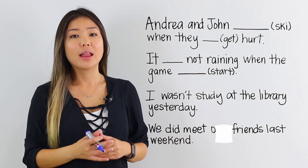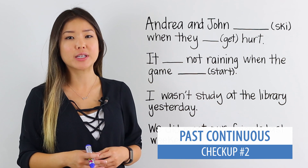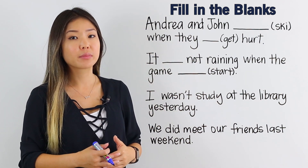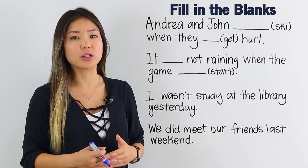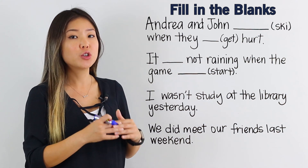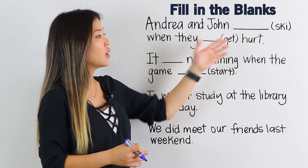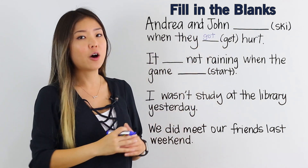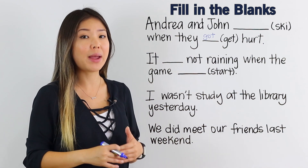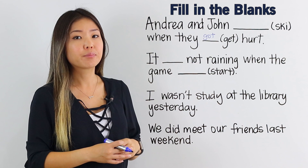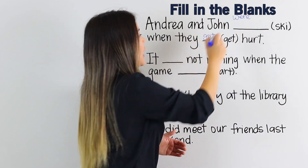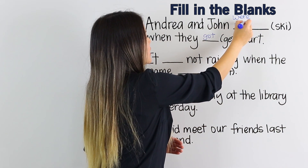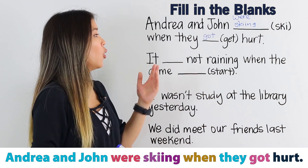Let's move on. Now let's start a checkup of the when usage of the past continuous tense. Take a look at the first example: Andrea and John blank when they blank hurt. Remember, when shows an interrupting action and needs to be used with the past simple tense. The past tense of get is got. Andrea and John were skiing when they got hurt.